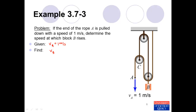We'll follow the procedure starting with step one: identifying datums. The datum is the origin or reference with respect to which we measure all the lengths. In this case, all the particles of interest — A, B, and C — are all moving vertically up or down, so we only need a single datum. If we had different particles moving horizontally or vertically, we would need more than one datum.